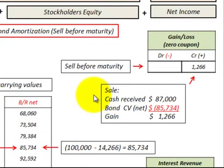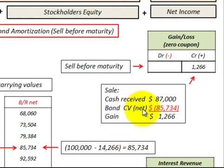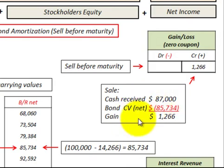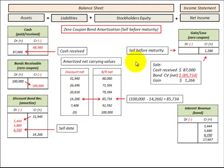Now we calculate our gain or loss when we sold that bond. We received $87,000 in cash, debited here for $87,000, and the bond's carrying value at that time was $85,734, shown over here. Subtracting the carrying value from the cash received, we get a gain of $1,266. So we credit the gain account for $1,266. That's how we calculate the gain or loss and recognize interest revenue when we dispose of a bond before its maturity date.